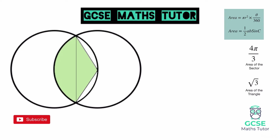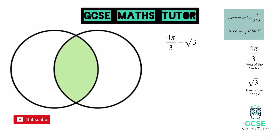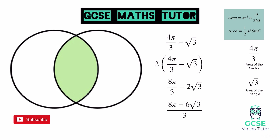Looking back at our diagram, to get the area of the segment we take the area of the sector and subtract the area of the triangle. So 4 pi over 3 minus root 3 is the area of that segment. Since we have two of those segments, we multiply by 2, giving us 2 times (4 pi over 3 minus root 3). Expanding the bracket, that gives us 8 pi over 3 minus 2 root 3, which is our final exact answer. You could also write this as a single fraction: 8 pi minus 6 root 3 over 3 — either form is fine.